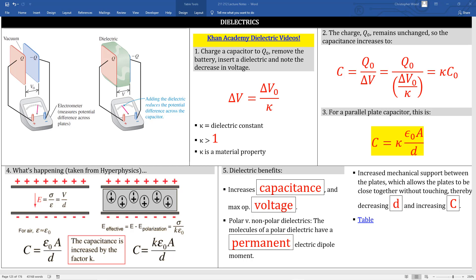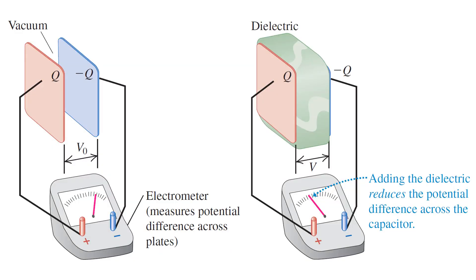Next section: dielectrics. All real capacitors have dielectrics. Dielectrics alter the properties of the capacitor in profoundly important ways. Here's our parallel plate capacitor. On the left shows the capacitor with nothing in between — just a vacuum. This capacitor is charged and the attached meter shows a voltage value. On the right is the same system, but with a dielectric inserted between the two plates. A dielectric is a material that's very dipolar — this is one reason why we spent so much time studying dipoles. Notice that the charge is unchanged, but the voltage is lower.